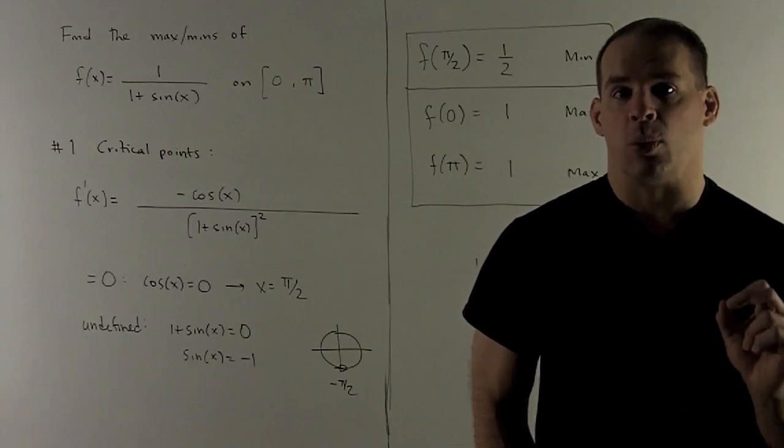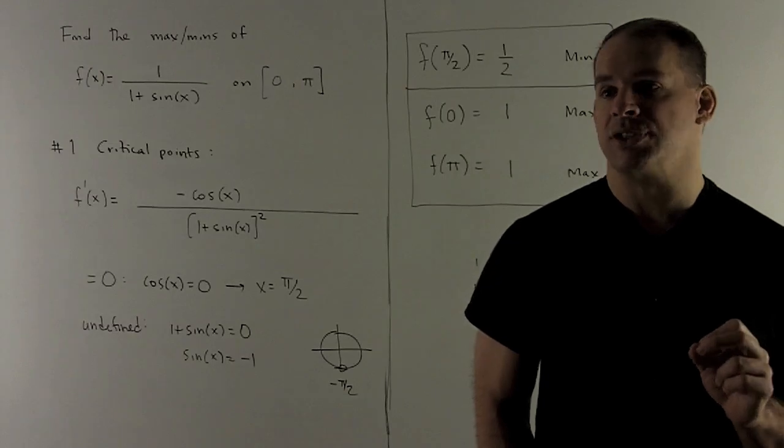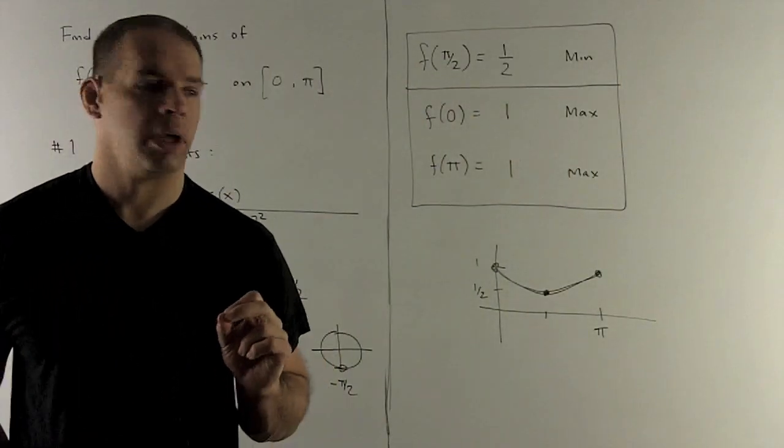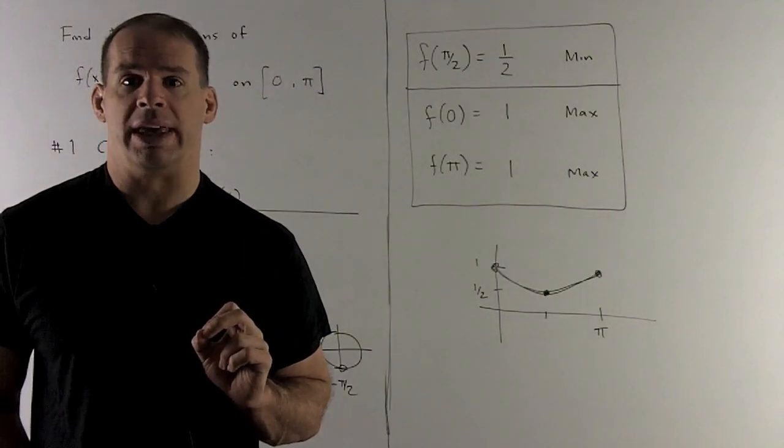So the only points I need to worry about are 0 and π, our endpoints, and π/2. Now, let's take a look. We put our points into our original function, what do we get?